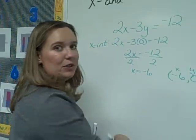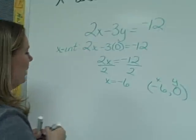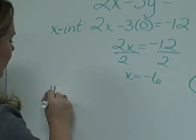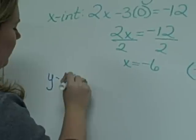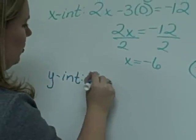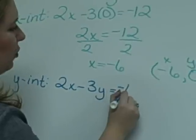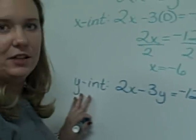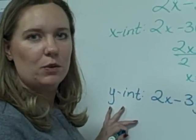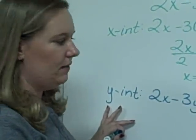With the y-intercept, we do the same thing. We take the same equation, 2x minus 3y equals negative 12. But if we're finding the y-intercept, we want to solve for y and put 0 in place of x.